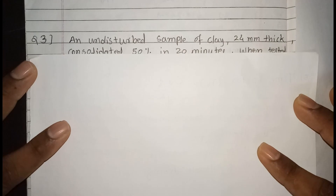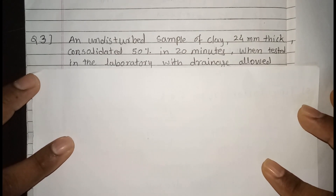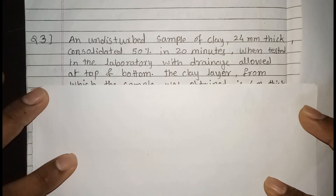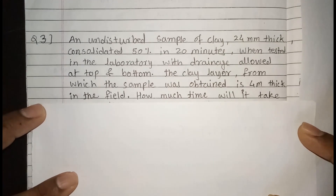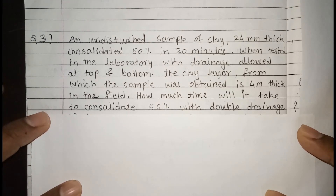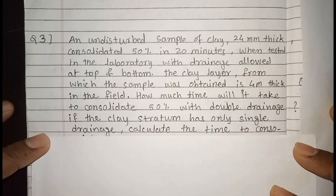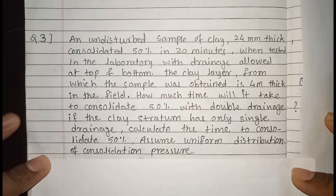This is the next numerical problem. An undisturbed sample of clay 24 mm thick consolidates 50% in 20 minutes when tested in the laboratory with drainage allowed at top and bottom. The clay layer from which the sample was obtained is 4 meters thick in the field. How much time will it take to consolidate 50% with double drainage? If the clay stratum has only single drainage, calculate the time to consolidate 50%. Assume uniform distribution of consolidation pressure.